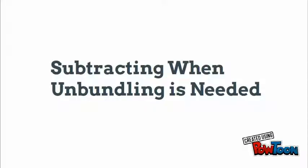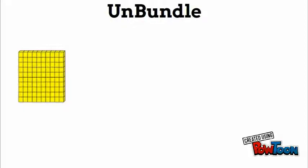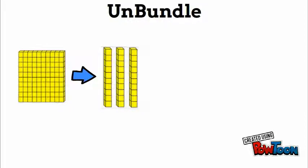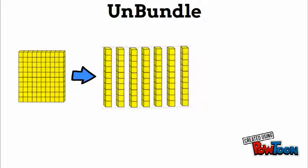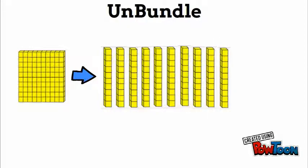Yo what's up third graders, today's lesson we're talking about subtracting when unbundling is needed. To unbundle something means to break it apart into ten of its smaller place values. So if I have a hundred, I could break it into ten tens. Likewise, if I have a ten, I could take it and break it into ten ones.